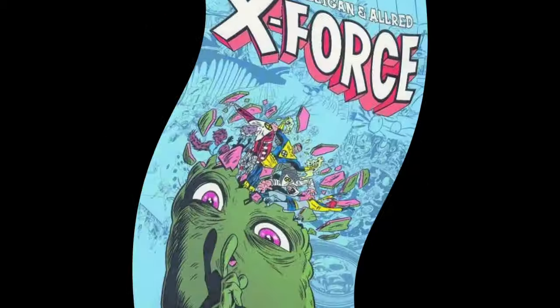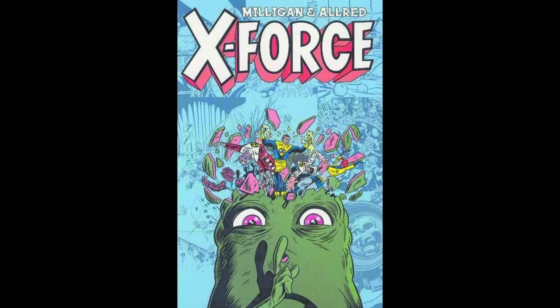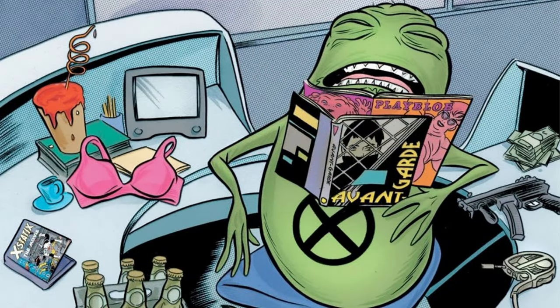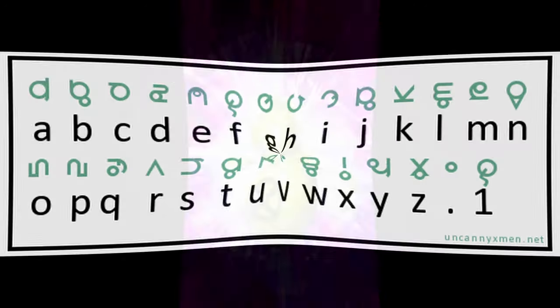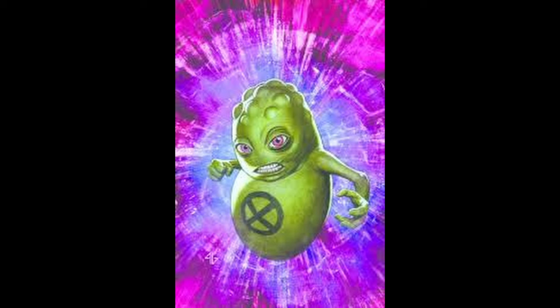Doop is a mysterious and enigmatic character associated with the mutant superhero team X-Force and its various iterations. He is often depicted as a floating, green, spheroid creature with a face on his chest. Doop is known for speaking in a language called Doopspeak, which consists of seemingly random symbols. Doop's origin and nature are intentionally left vague and mysterious, adding to the character's intrigue.